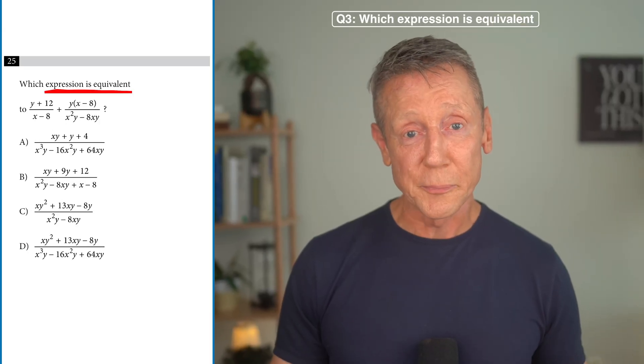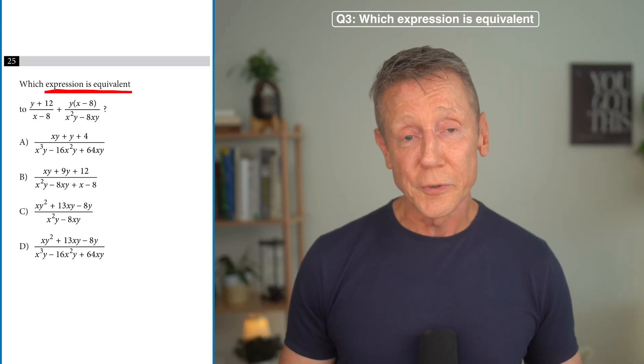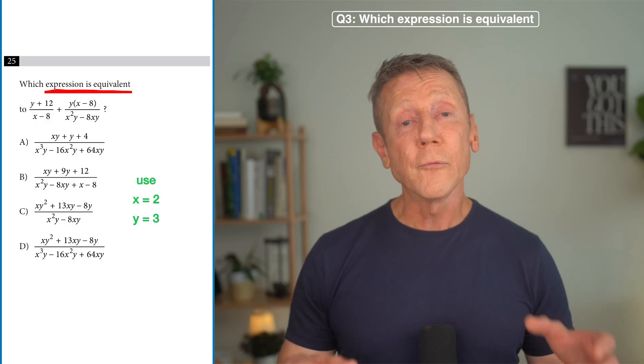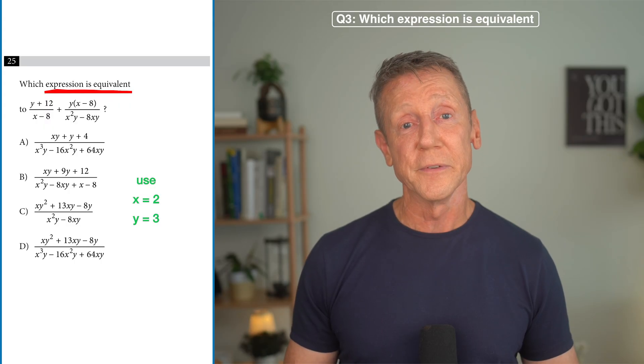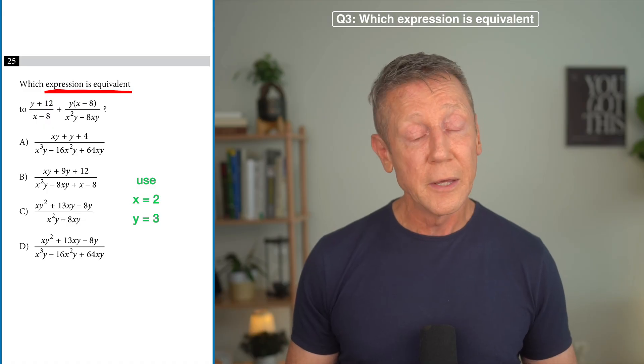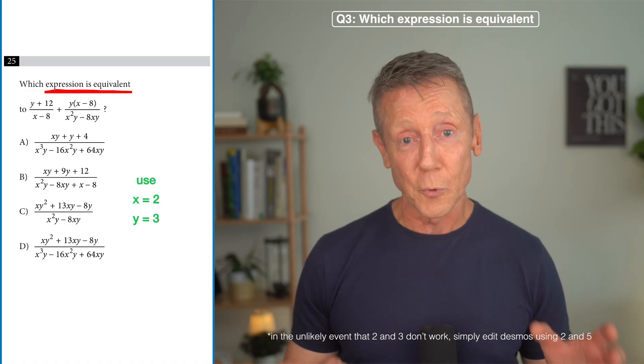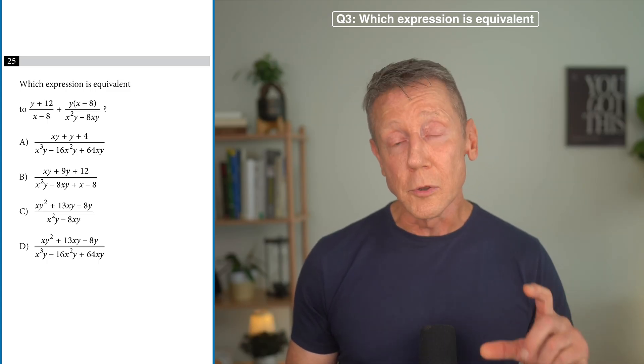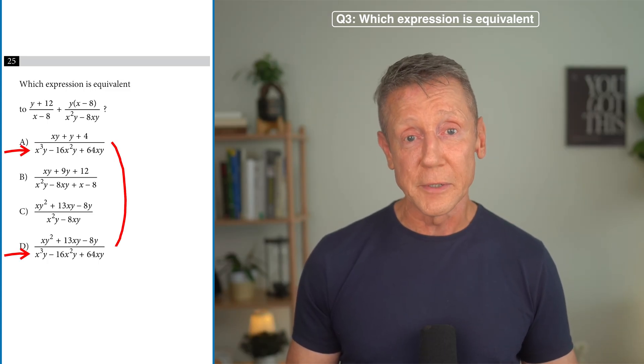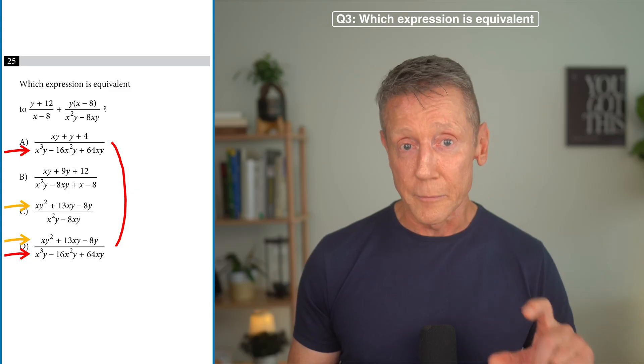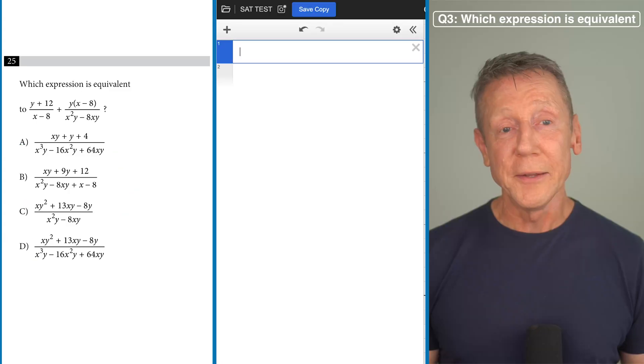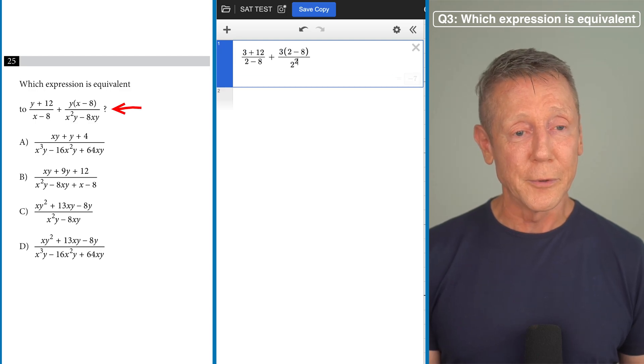This last question just asked for which expression is equivalent and there's no restrictions on the variables so we're going to use 2 and 3 again. And just so you know I've worked through every question involving equivalent expressions in the SAT digital PDFs and I didn't find a single case where 2 and 3 didn't work. I will admit this looks like a lot of typing but look at the first and the fourth answer choices. They have the same denominator and the third and the fourth have the same numerator so with duplicate we'll still get this done in under 90 seconds.